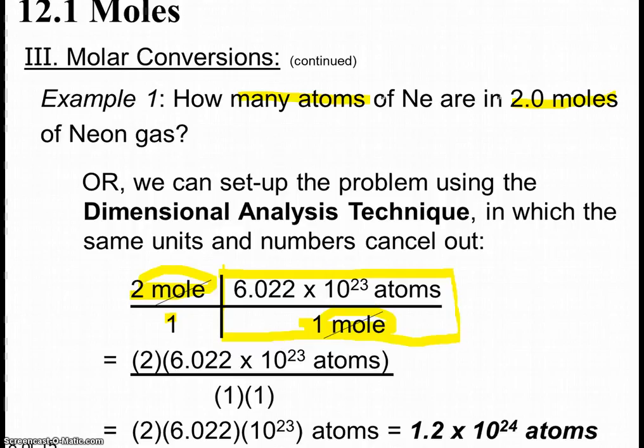So once we cancel out any words or numbers that we have in common, what we have is 2, left over from the 2 moles, times Avogadro's number, and we still have the word atoms left, over 1 times 1. And the word mole canceled out, so we can just get rid of the mole. And anything divided by 1 is just itself, so we can get rid of the 1s. And when we multiply this out and we move the decimal appropriately, we get the same answer that we got using this logically.